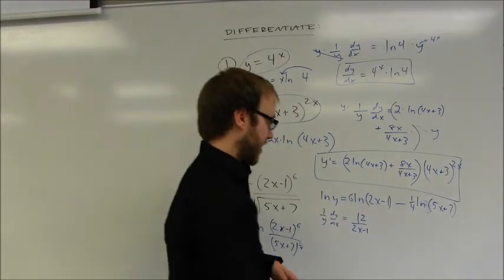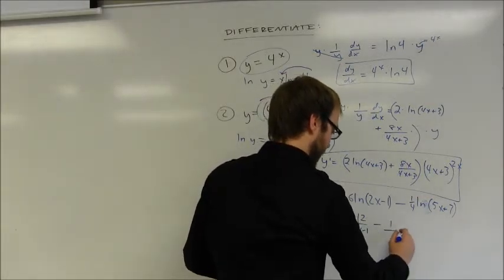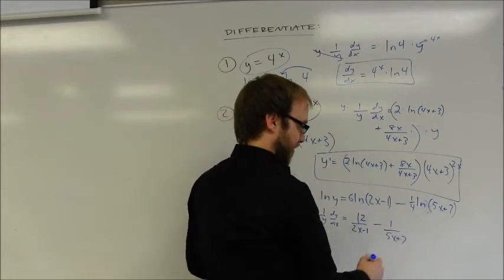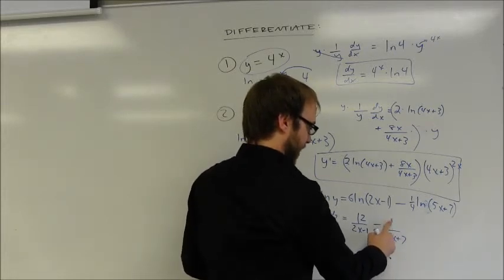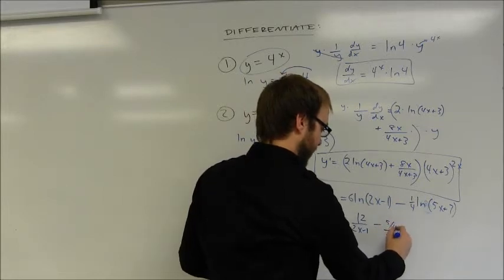For the second part here, I have minus 1 over 5x plus 7 times the derivative of the inside function, which is going to be 5. And I've also got that 1 fourth out there. So I could have 5 fourths in the numerator here.